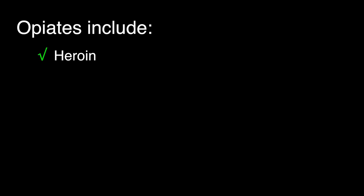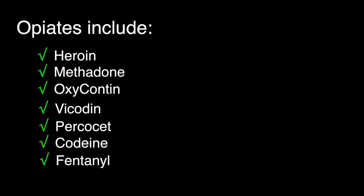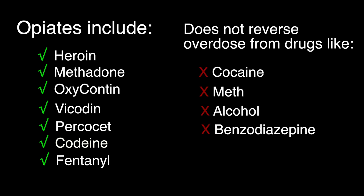Opiates include drugs like heroin, methadone, oxycontin, Vicodin, Percocet, codeine, and fentanyl. Naloxone does not reverse overdose from drugs like cocaine, meth, alcohol, or benzodiazepines like Xanax or Valium.